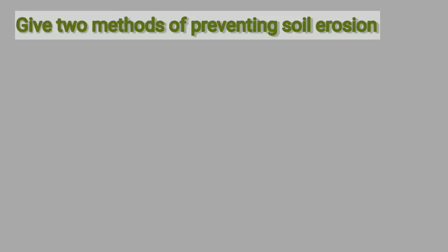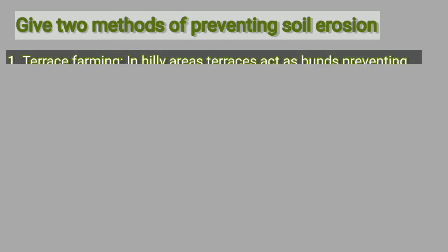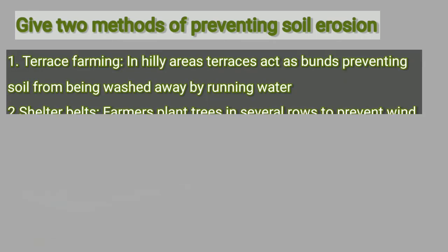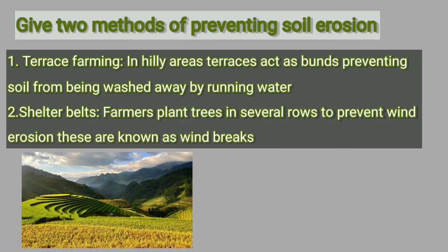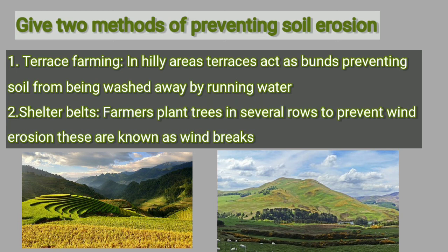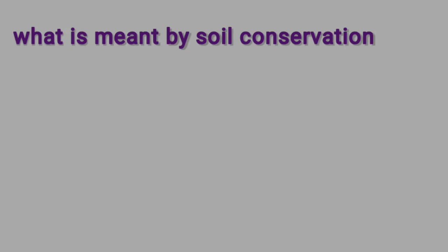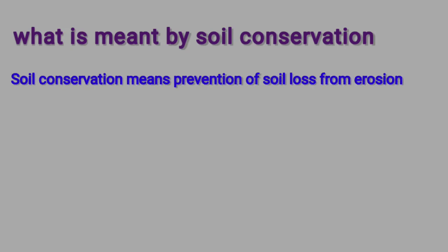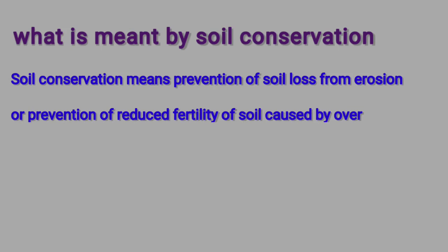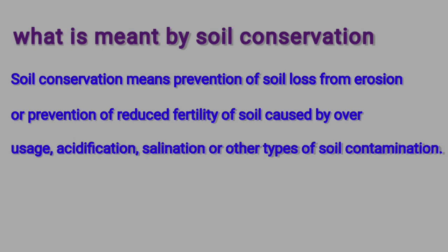Give two methods of preventing soil erosion. Terrace farming: in hilly areas, terraces act as bunds preventing soil from being washed away by running water. Shelter belts: farmers plant trees in several rows to prevent wind erosion; these are known as windbreaks. What is meant by soil conservation? Soil conservation means prevention of soil loss from erosion, or prevention of reduced fertility of soil caused by over-usage, acidification, salinization, or other types of soil contamination.